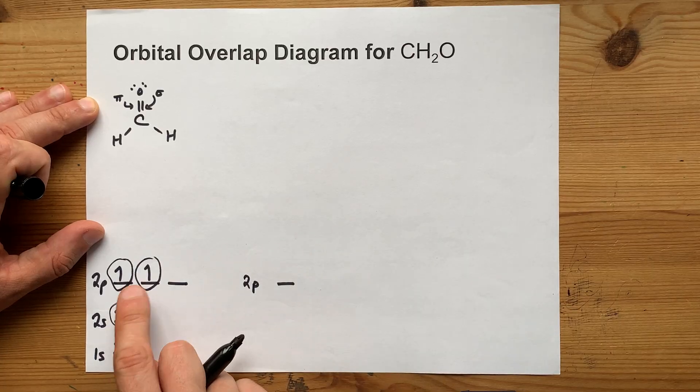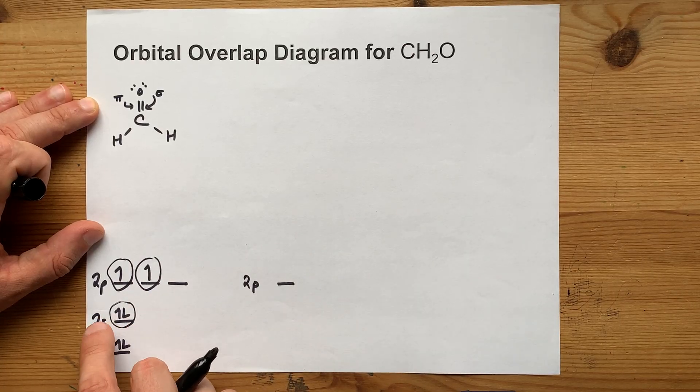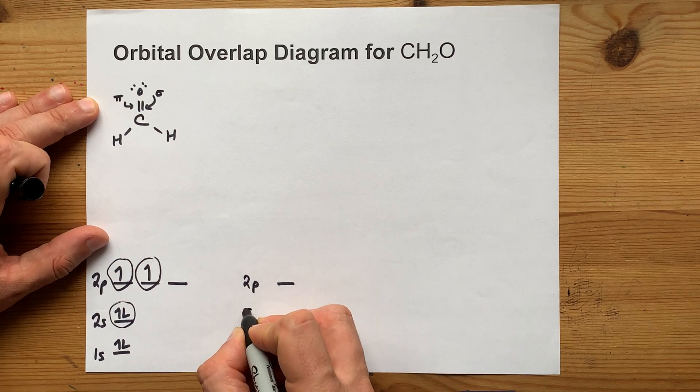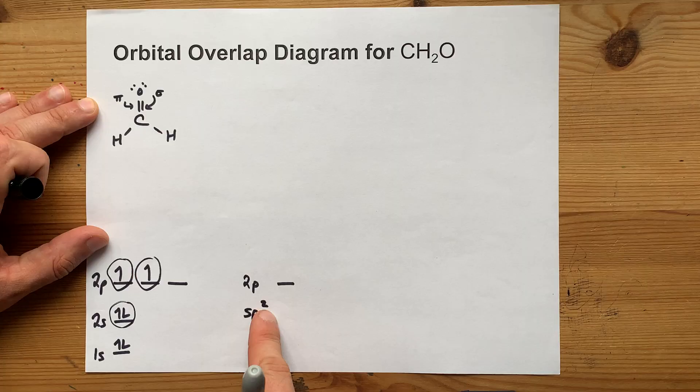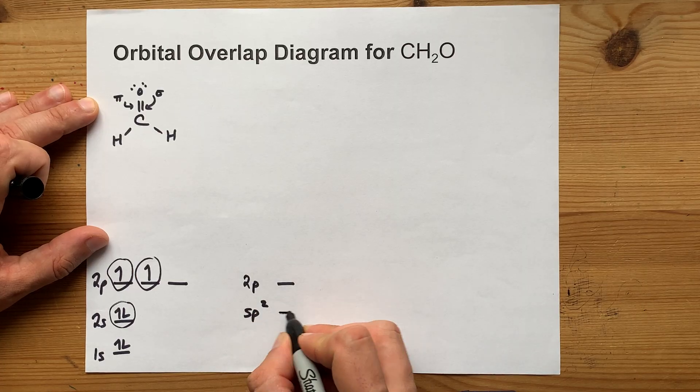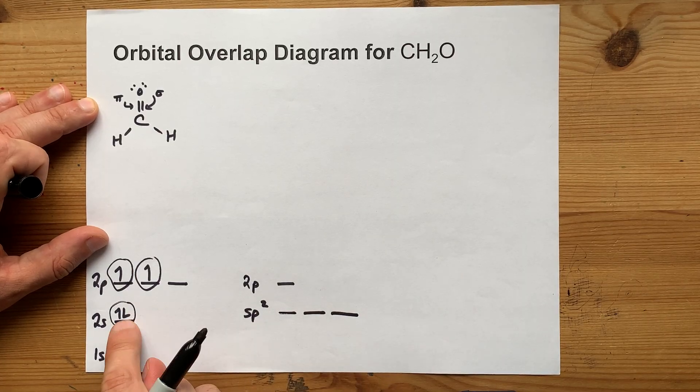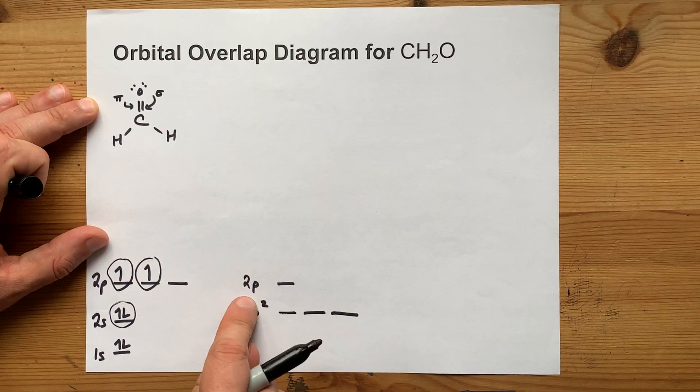You're hybridizing these three circled orbitals, that is an s and two of the p's. You're going to call them sp² hybrid orbitals. Get it? Two of the p's and an s. And you're making three of them because you used up three atomic orbitals to make it.